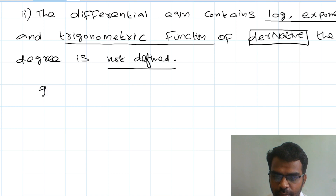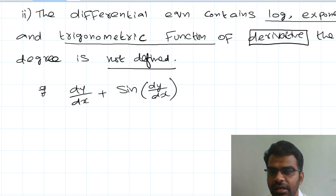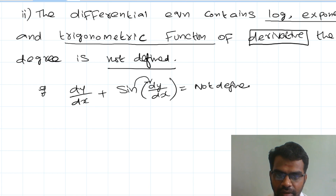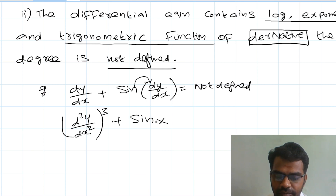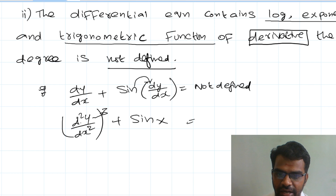For example: dy/dx plus sin(dy/dx). Here sin(dy/dx) has a derivative inside the sine function, so degree is not defined. In another case, d²y/dx² with power 3 — the highest order is d²y/dx², and its highest power value is 3, so degree is 3.